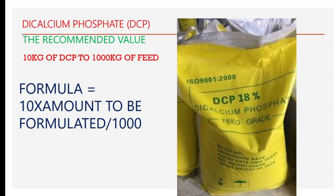All these additives — methionine, lysine, DCP — are synthetic and found in the market. I will show you pictures of those particular feed additives. The dicalcium phosphate is also in powder form and found in the market. The reason we add these things is that we do have some small amounts of them in natural ingredients, but not adequate enough to meet the nutritional requirements of the fish. We supplement those deficiencies with synthetic ones to achieve the balanced nutrients needed at the end of formulation.